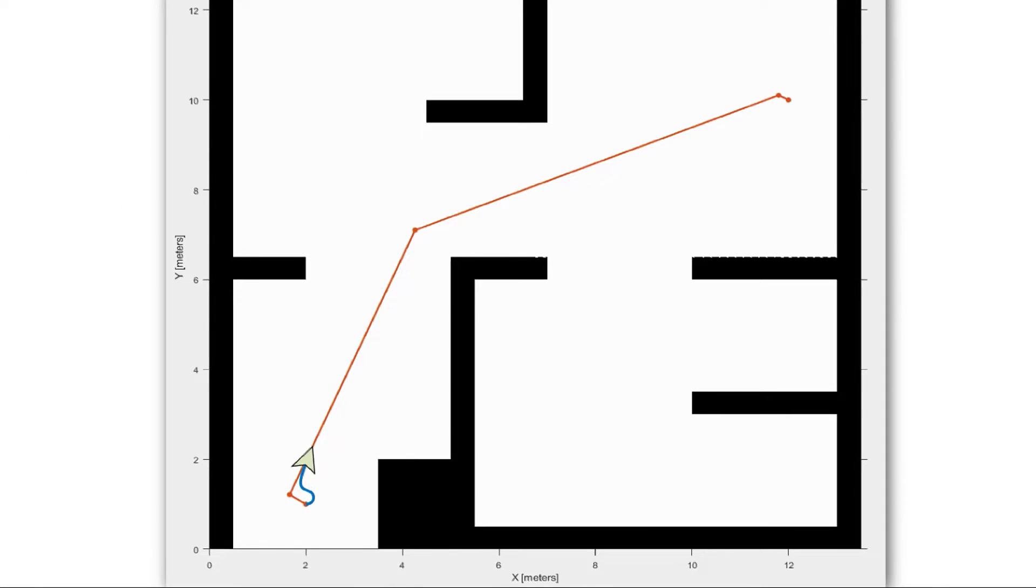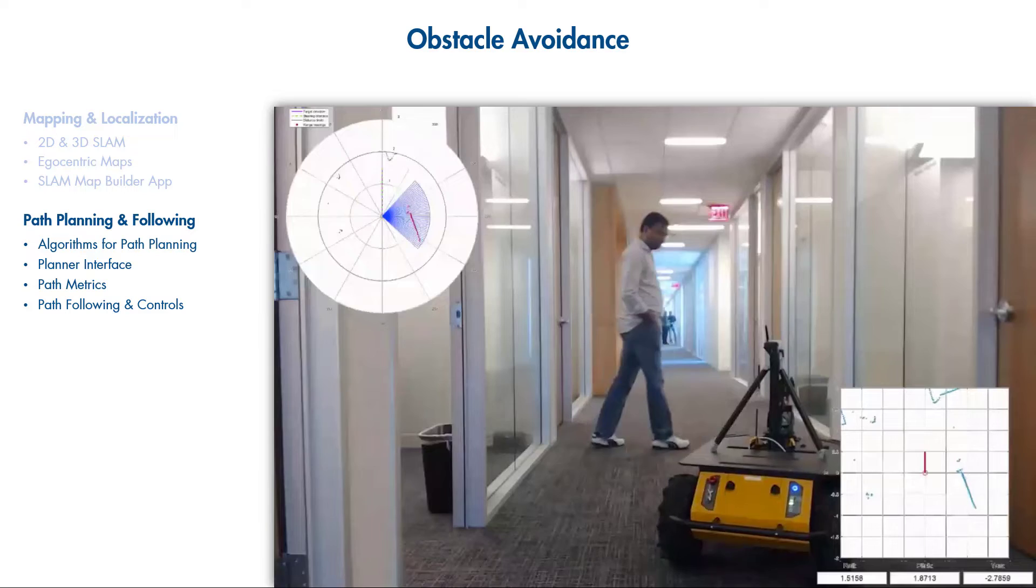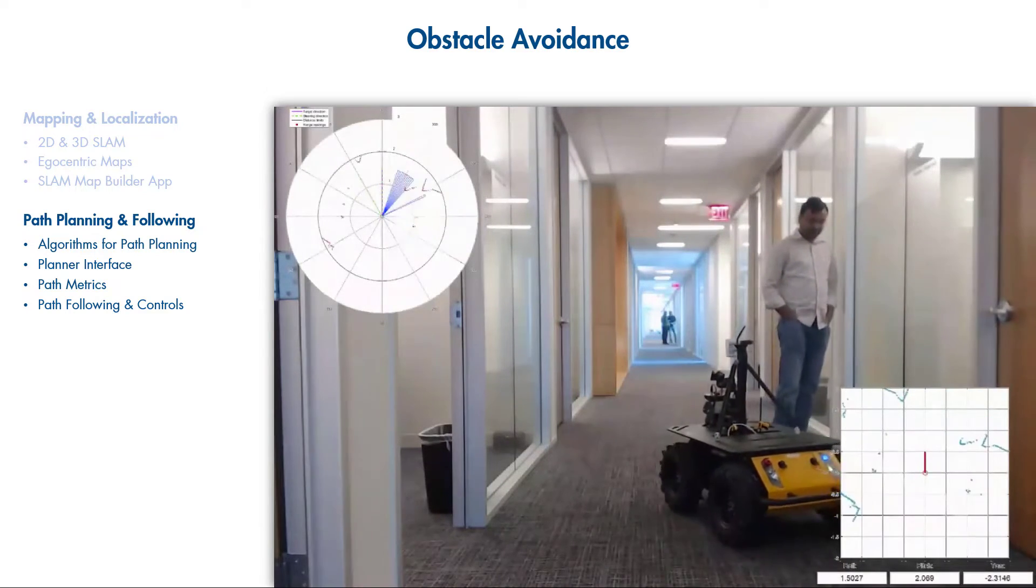Navigation Toolbox includes algorithms for smooth trajectory generation and for controlling a vehicle so it follows a planned path. Algorithms such as Vector Field Histogram can be used for obstacle avoidance.